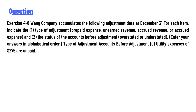Wang Company accumulates the following adjustment data at December 31. For each item, indicate the type of adjustment — prepaid expense, unearned revenue, accrued revenue, or accrued expense — and the status of the records before the adjustment: overstated or understated. Enter your answers in alphabetical order. Item (c): utility expenses of $275 are unpaid.